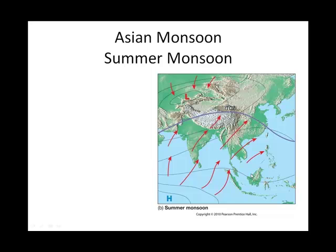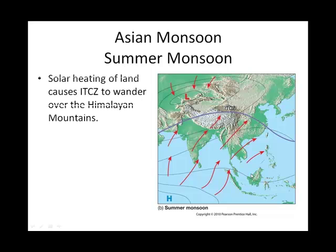Let's look at the Asian monsoon seasons, starting with the wet summer season. I'm pointing out a few things here — these mountain symbols represent the Himalayan mountains right here.